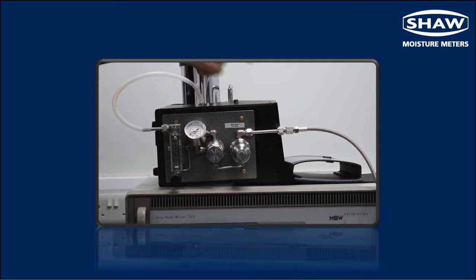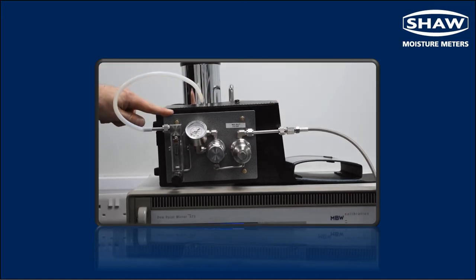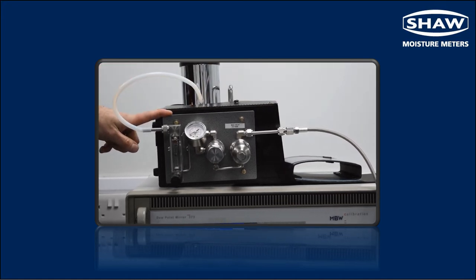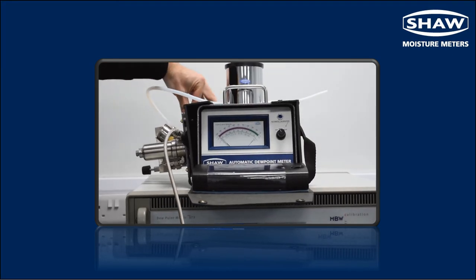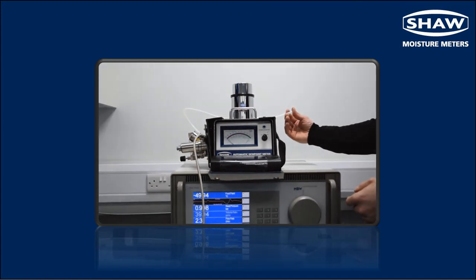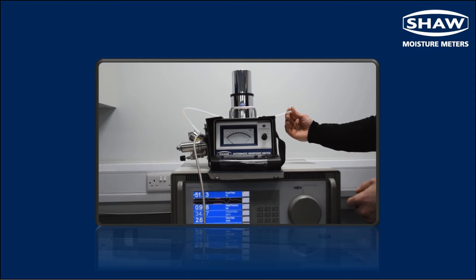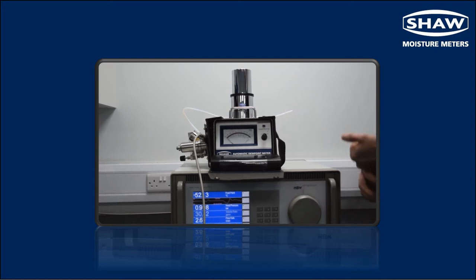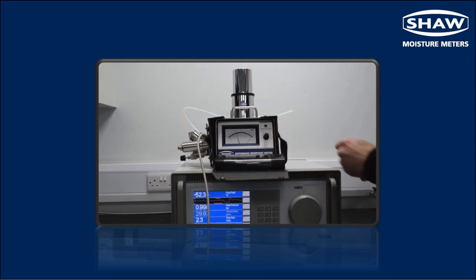So once we're happy that the sample line has been purged and the SU3 sample system has been purged, then we can expose the sensor to the process gas by raising the dry down head. And that's done by covering the outlet and allowing the pressure in the system to raise the head. And at that point we can start to take readings.